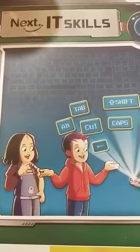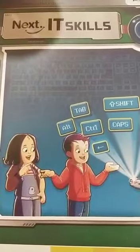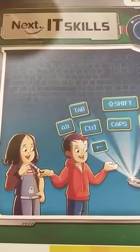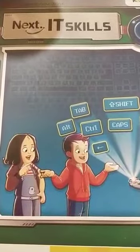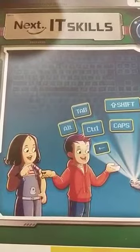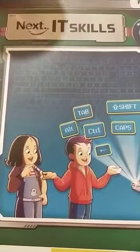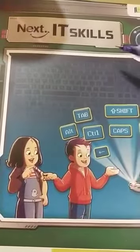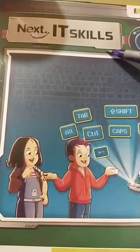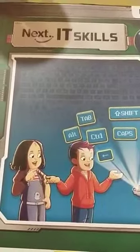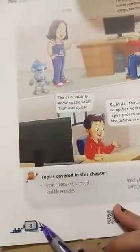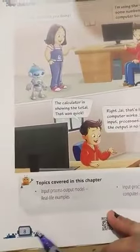Hello children, so in today's computer work children, you have to read chapter number 2 from your book. So this is your IT skills book children. Let's move on to chapter number 2 now. So this chapter is on page number 8 children. Let's start reading it.